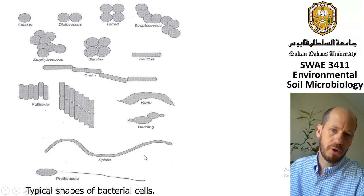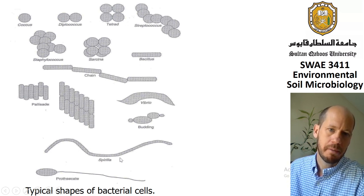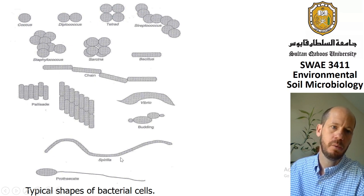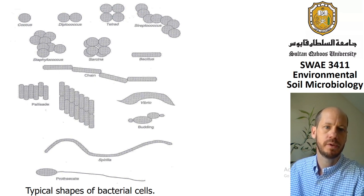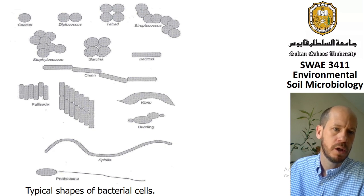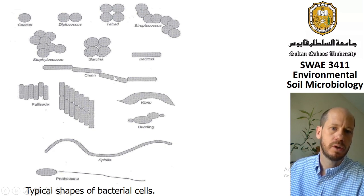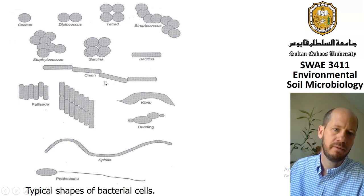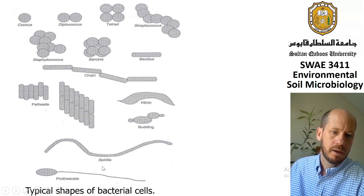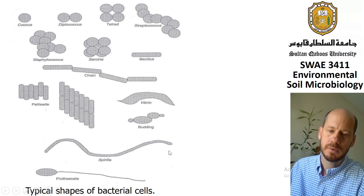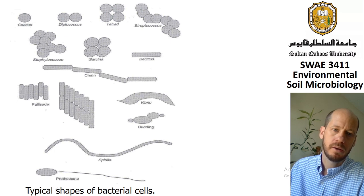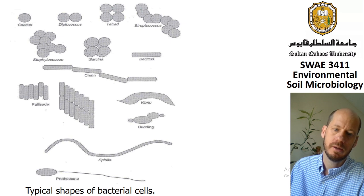More diverse forms we can find include coccus forms, diplococcus, tetrads, streptococcus, staphylococcus, and so on. Bacteria can be bound in chains, and here is the spirilla — just to be a little broader on the types of shapes you can observe from bacteria in soils.